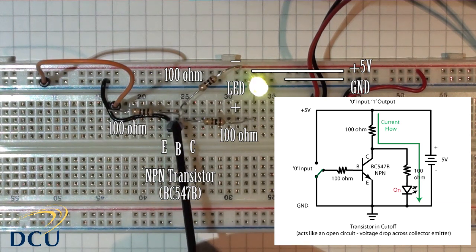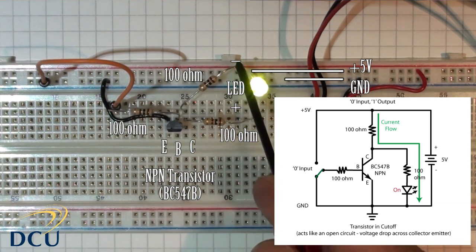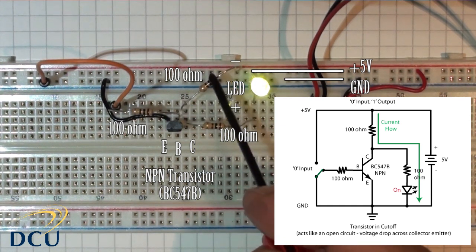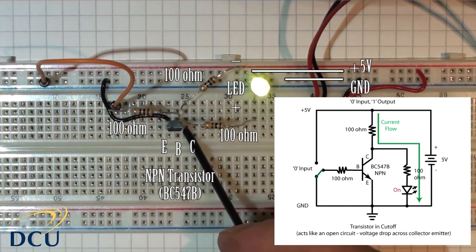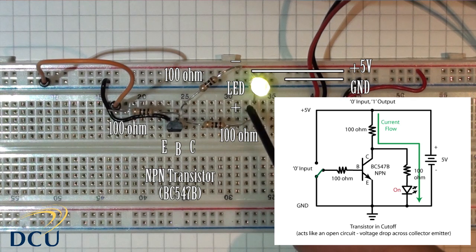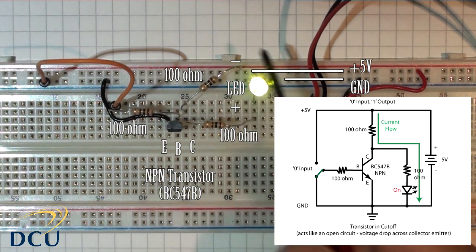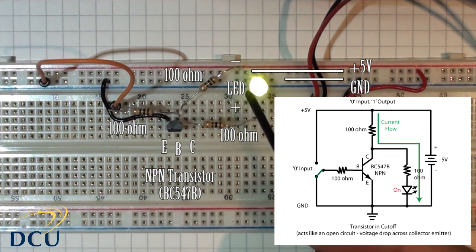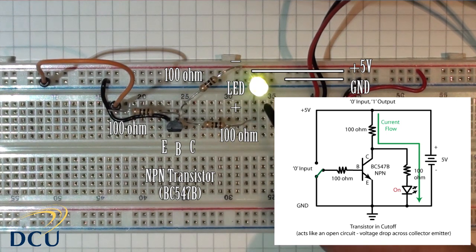On the collector side, we have a resistor connecting the high rail to the collector pin of the transistor. We also have a load resistor through the LED to ground, which gives us our output load.